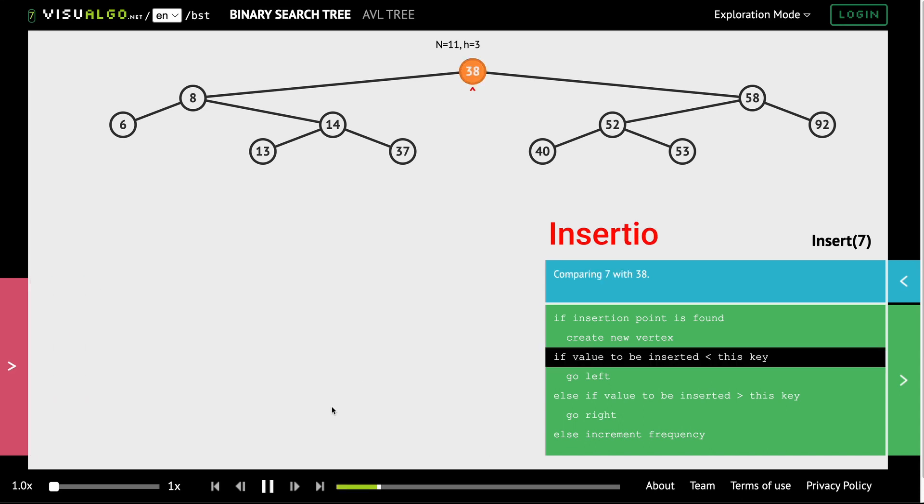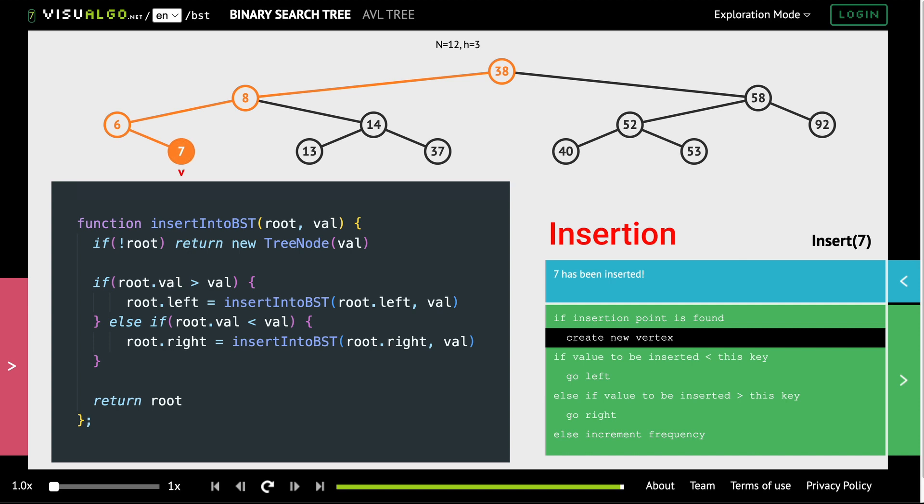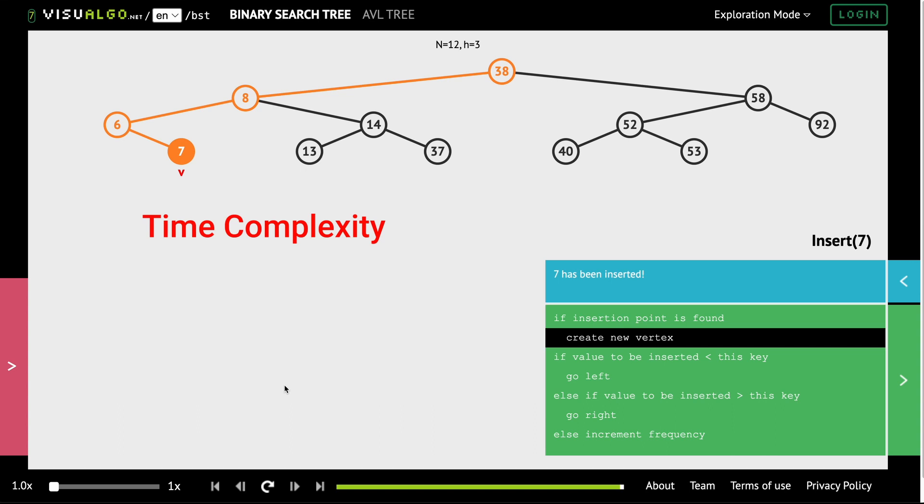Insertion is similar to searching. We perform a basic binary search: if the value to be inserted is less than the current node's value we go left, if it's greater we go right. And if we arrived at our destination we just insert the value. The time complexity is also similar to searching, it's O of log n for balanced trees, but it can become O of n if the tree is unbalanced.